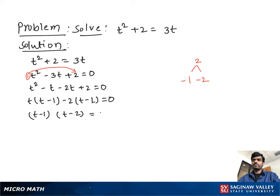All these equal to 0. These two terms multiply give us 0. So we set each term equal to 0. So t minus 1 equal to 0 or t minus 2 equal to 0.